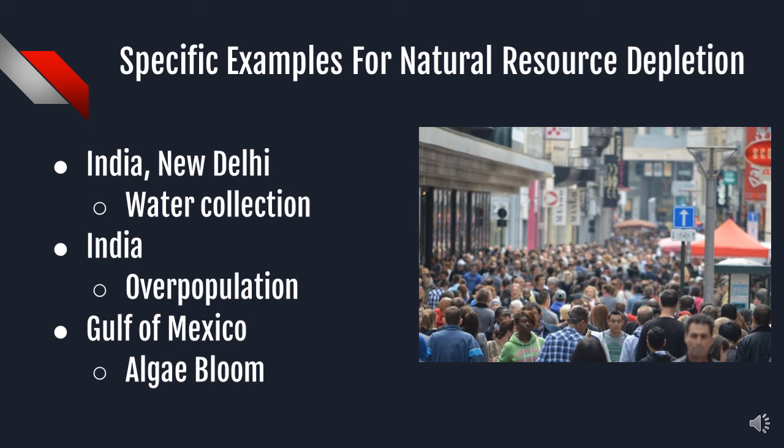Also in India, overpopulation is increasing the death rate, the number of jobless people, and making the environment very unhygienic. Moreover, every year, a huge body of water from the interstates comes in through the Mississippi River filled with fertilizer. It then enters the Gulf of Mexico and causes huge algae blooms, which takes away all the oxygen from the water. This shortage of oxygen also destroys most of the animals' habitats.